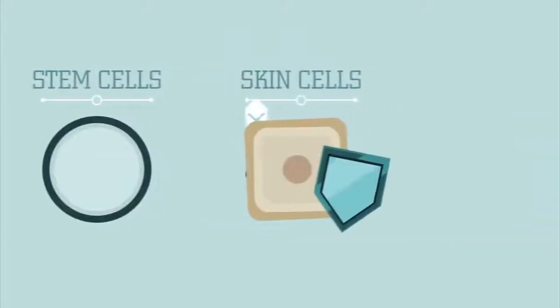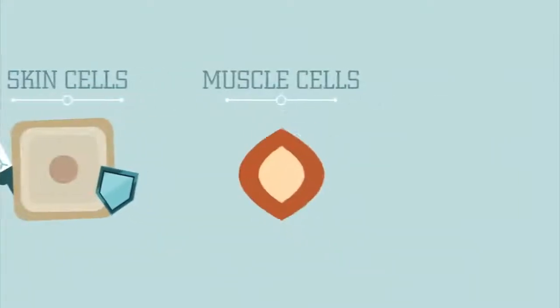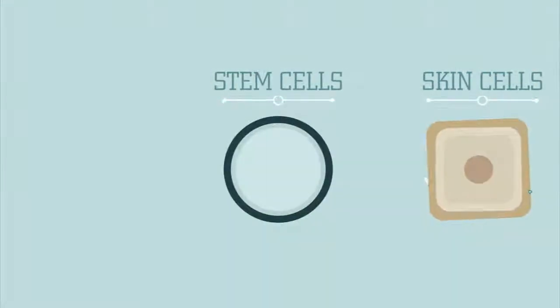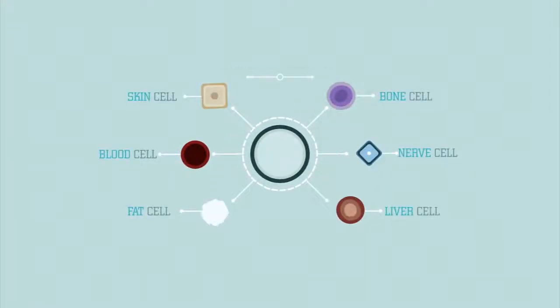While skin cells protect your body, muscle cells contract, and nerve cells send signals, stem cells do not have any specific structures or functions. Stem cells do have the potential to become all other kinds of cells in your body.